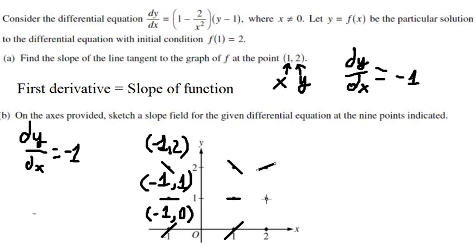Now for the point where x equals to 2 and y equals to 1, we put this value here and we have dy over dx equals to negative 1 over 2, so the line will go like this. And that is the final answer.